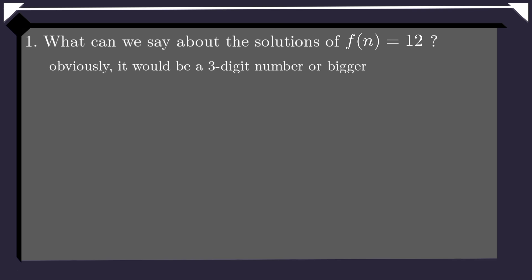Based on what we've learnt just now, what can we say about the solutions when F of n equals 12? Obviously, the solutions would be a three-digit number or bigger. Also, the number of three-digit solutions would be equal to number of 4, or 5, or 6-digit solutions, and so on. So in this case, we should only focus on the three-digit solutions, because other solutions are trivial. Now, let's focus on the general case.